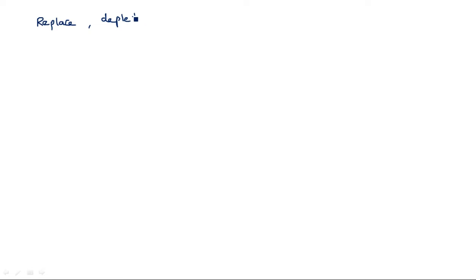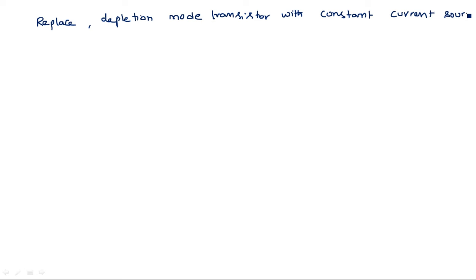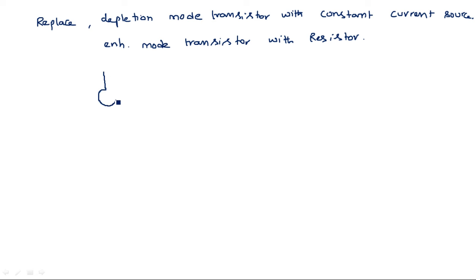With these assumptions, we replace the depletion-mode transistor with a constant current source and the enhancement-mode transistor with a resistor. The circuit diagram shows a constant current source and the enhancement-mode transistor represented as resistance R1 in the linear (ohmic) region, with VDD supplied at the top.